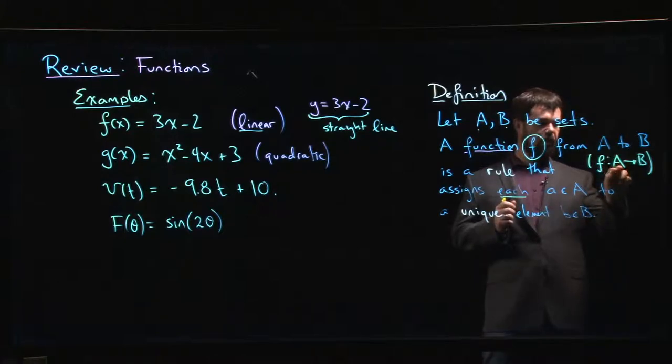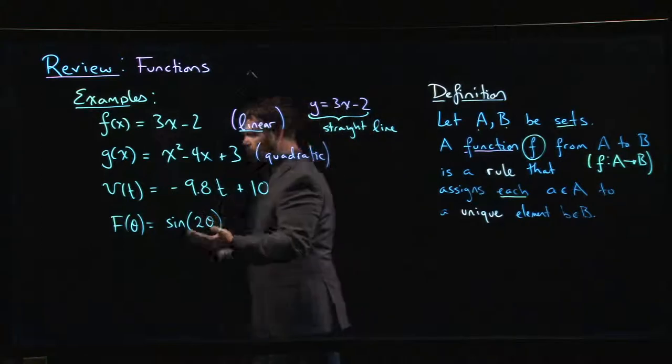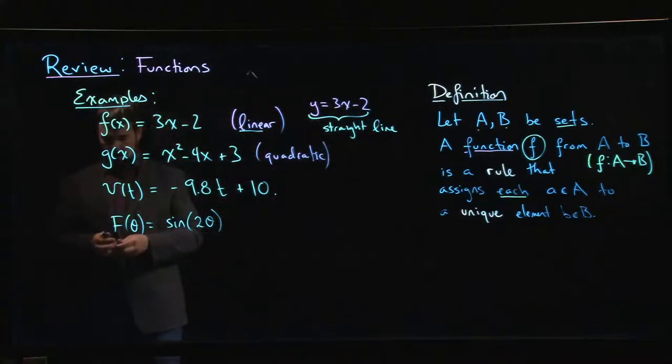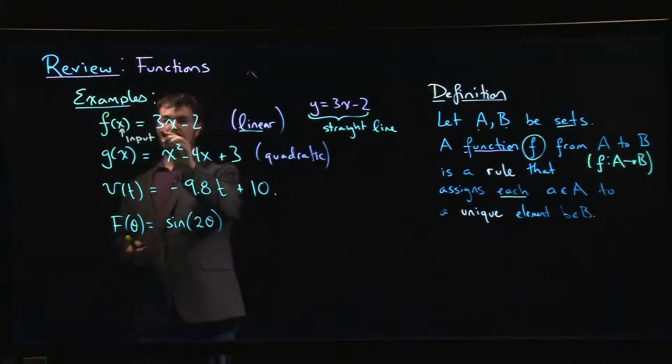So there's this sort of dynamic point of view when you have a function that there's inputs that are being transformed into outputs. In these basic examples that we had here, the x that you see here, that's your input. That comes from some set A, and over here is your output. This whole thing here, that's going to be your output.